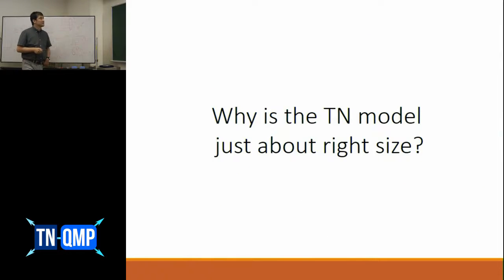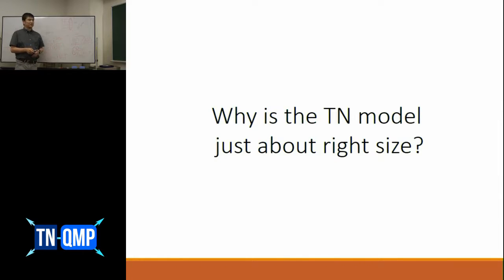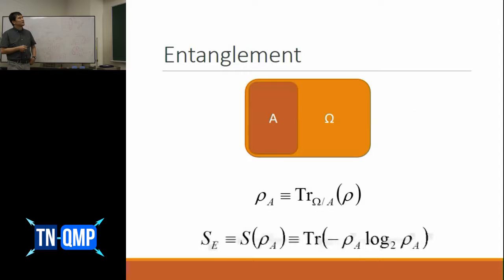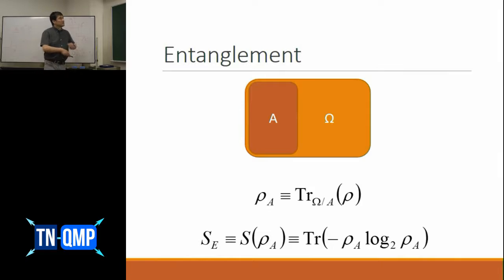I said that the tensor network model is just about the right size — not too large, not too small, just enough to express many quantum systems of interest. But why is that? In order to understand why it's right-sized, we need to know a little about entanglement.